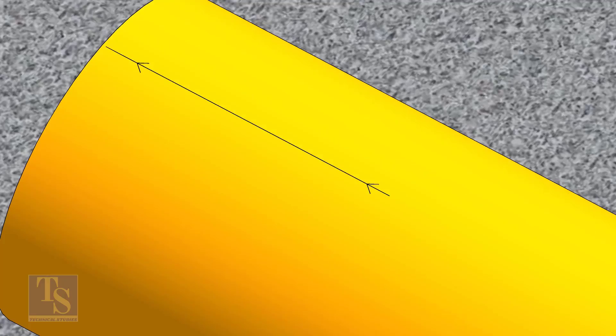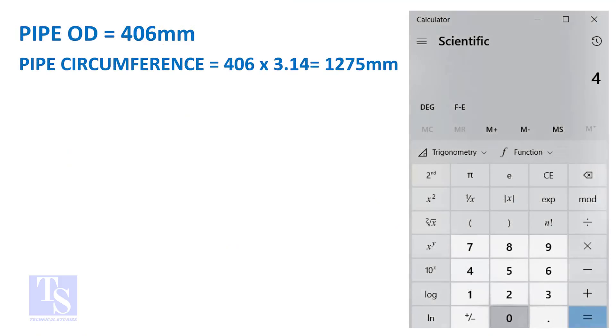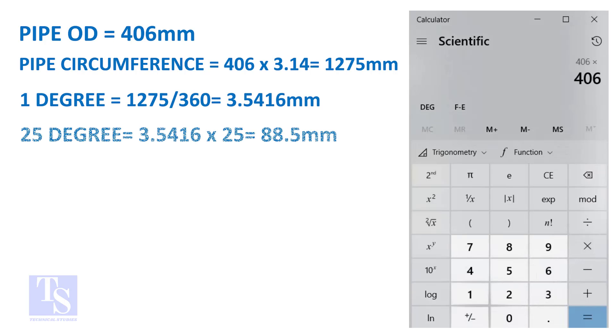Let us calculate the circumferential distance or arc length for 25 degrees. Multiply the OD by 3.14 to get the circumference of the pipe. Divide the circumference by 360 to get the arc length of 1 degree.